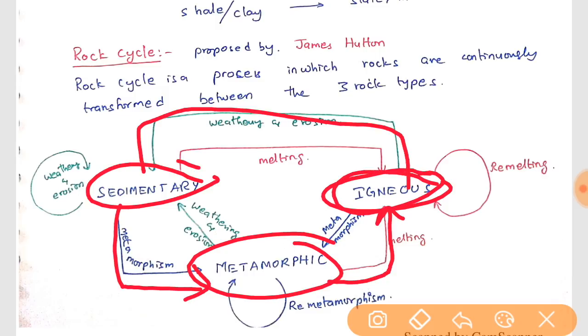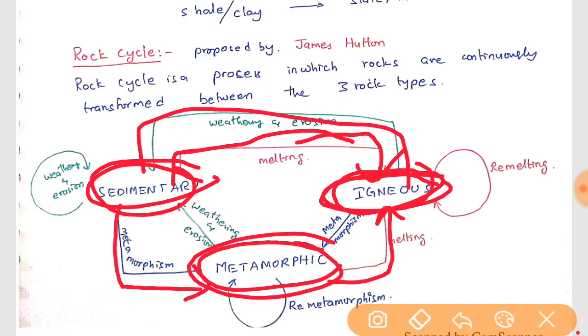If this sedimentary rock also comes to the magmatic chamber and if it gets melted up, it is also called igneous rock. If this metamorphic rock with weathering and erosion, it can become sedimentary rock. All these are one and the same and it changes the forms from one rock to other rock. This is proposed by James Hutton.